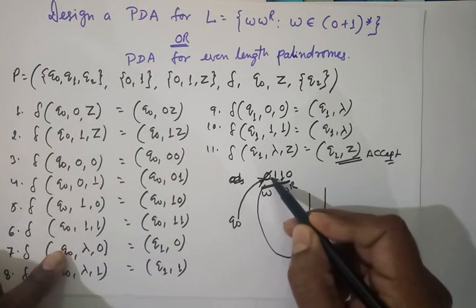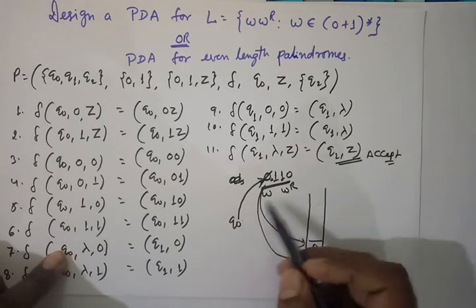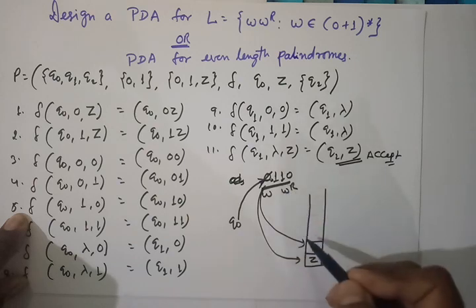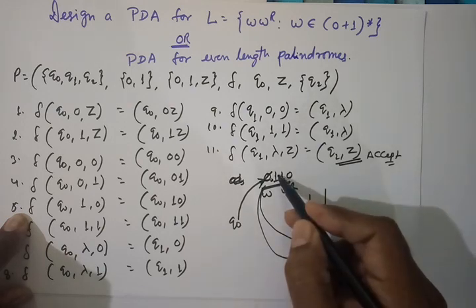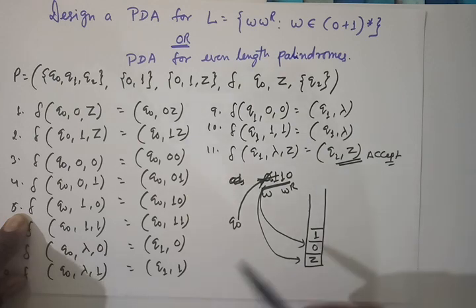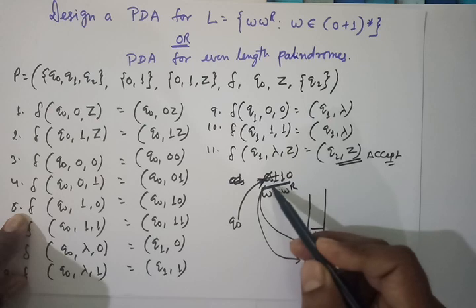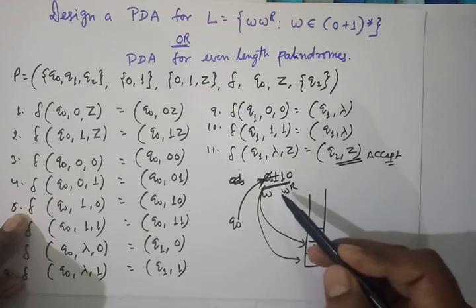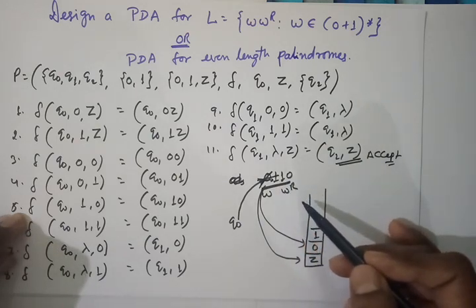Next symbol is 1. We are in Q0 getting 1, and the new top is 0. So Q0, input 1, top 0 — Rule 5 applies. We push 1 on top of the stack, so the new top becomes 1. Now the W part — that is '01' — is consumed, and the remaining part is WR '10'. We need to change our state.